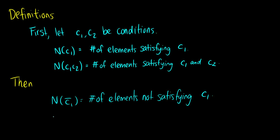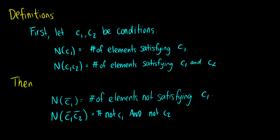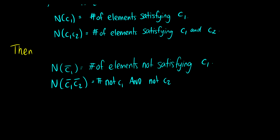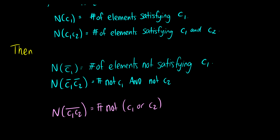What's more interesting is when we have n(C1 bar, C2 bar) — a bar over each individually — this is the number of elements that are not C1 and not C2. This is different from n(C1, C2) with a bar over both of them together, which is the same as the number that are not C1 or C2. So these are a little bit different, and we're going to be dealing with the individual-bar situation.